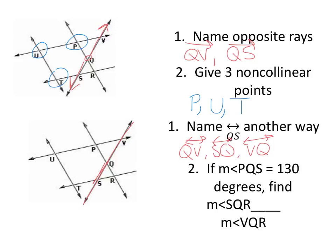And the last one. Mark up your diagram. If the measure of angle P-Q-S, so P-Q-S is 130. So write 130 in here. Find the measure of angle S-Q-R. So S-Q-R. Well these two have to make up a line. So they have to add up to 180 degrees by the angle addition postulate. So this needs to be 50 degrees. Because they add up to a line.